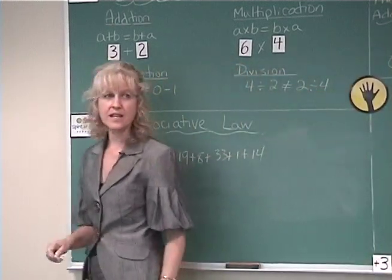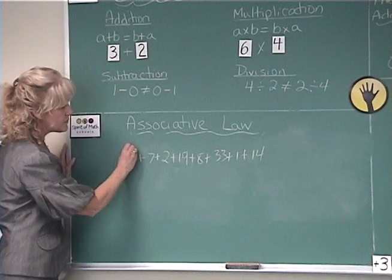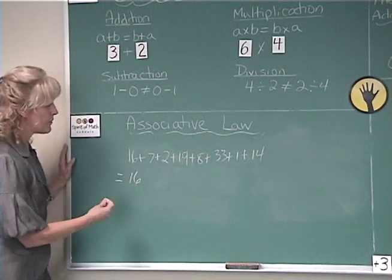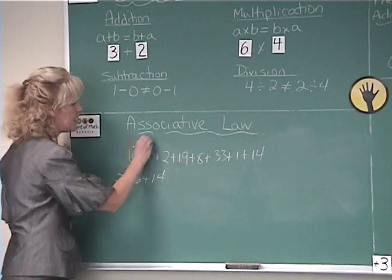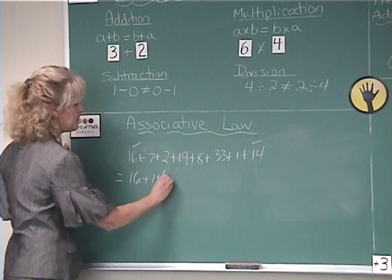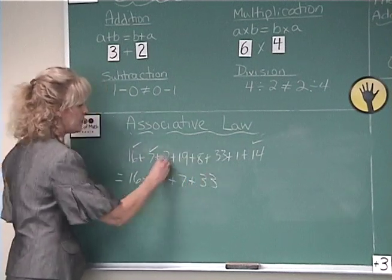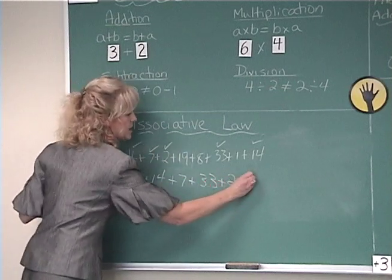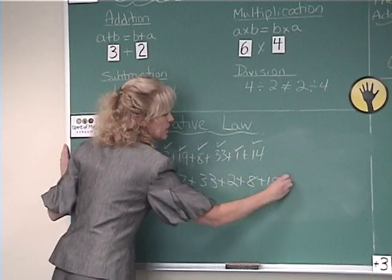In this case, what you can do is take the 16 and first of all use the commutative law. You can move the numbers around for ease of calculation. So 16 plus 14 can be moved around so that they come together. Then you can take the 7 with the 33 to make a multiple of 10, and the 2 with the 8, and then the 19 with the 1.